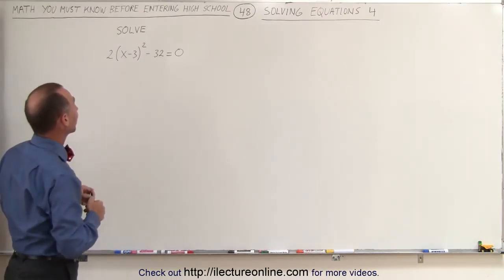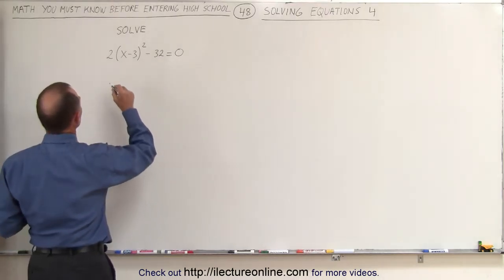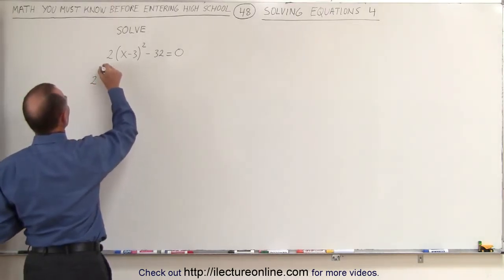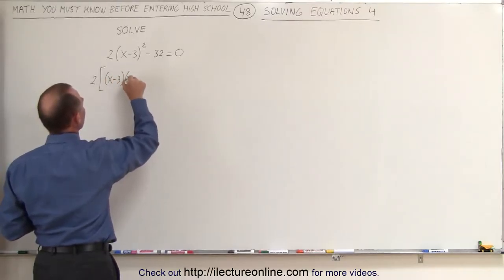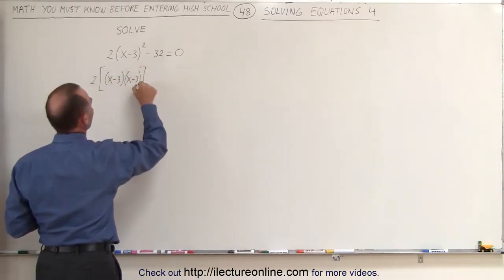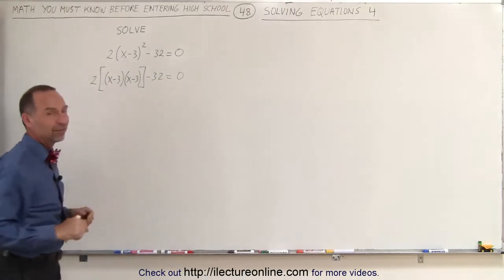We'll multiply x minus 3 times x minus 3 and see what we get. So this is equal to 2 times x minus 3 times x minus 3 minus 32 equals 0. So now we're going to multiply these out and see what we get.